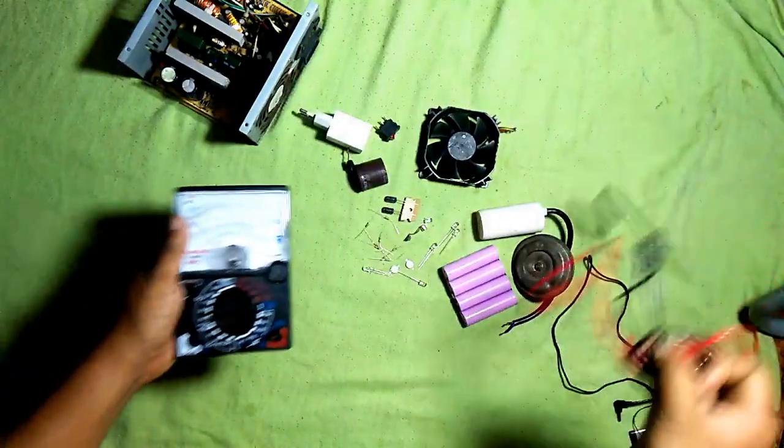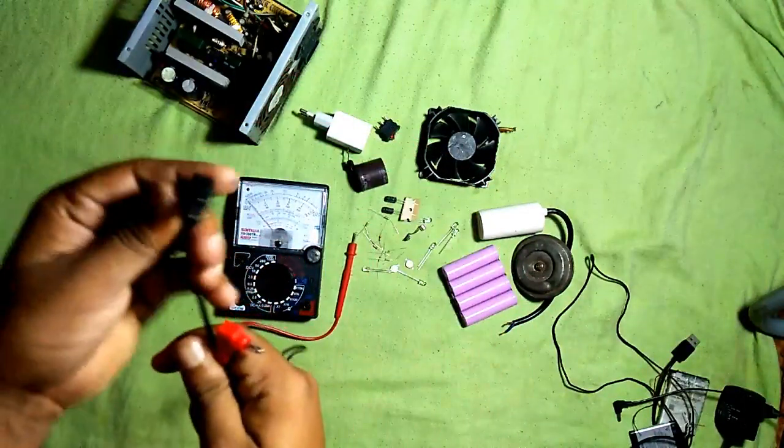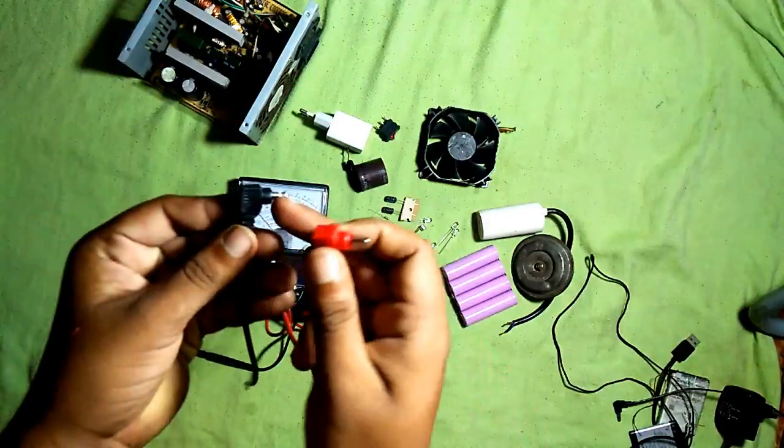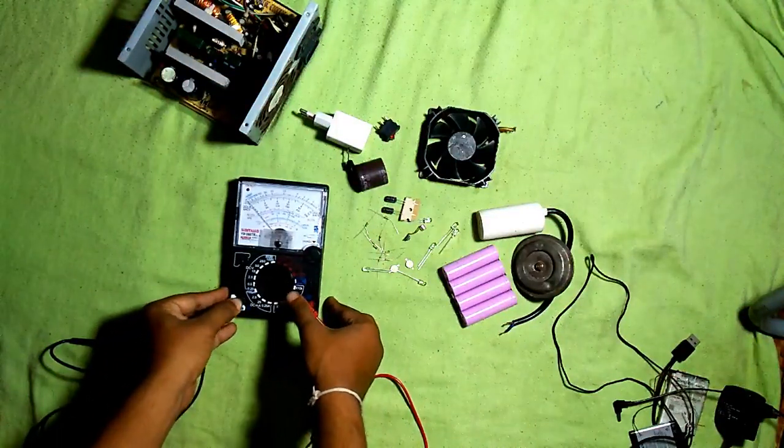Let's check this out. The red test lead must go to the positive terminal of the multimeter, and the black one goes to the minus or common terminal of the multimeter.